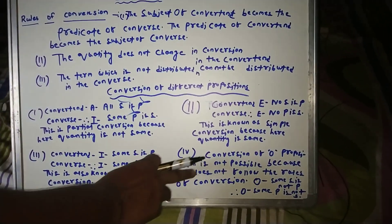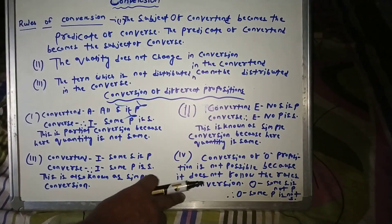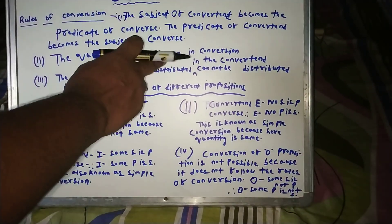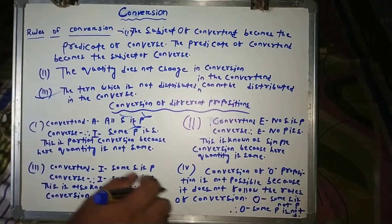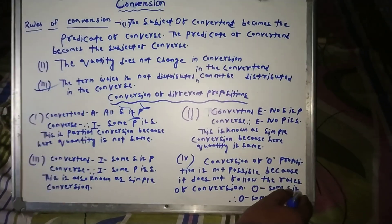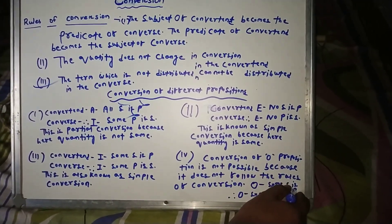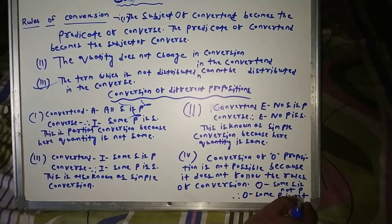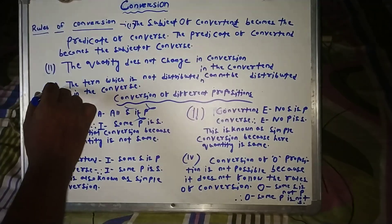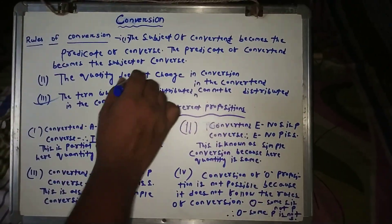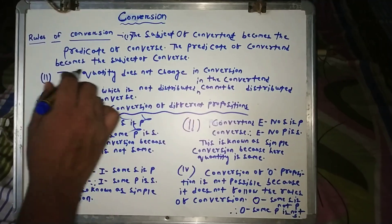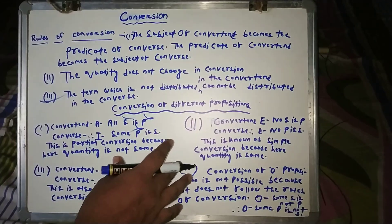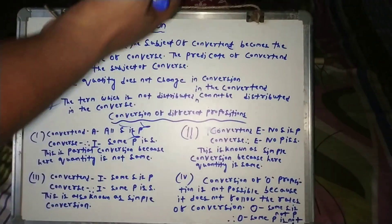The conversion of the O proposition is not possible because it does not follow the rules of conversion — specifically the third rule. In 'Some S is not P,' the predicate term P is distributed in the convertent. But the subject term S is not distributed. In the attempted converse 'Some P is not S,' the S term becomes distributed, which violates the third rule. Therefore, conversion of the O proposition is not possible.